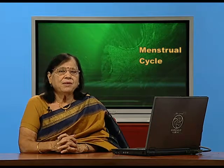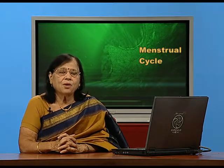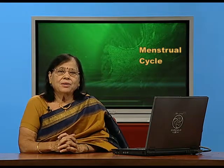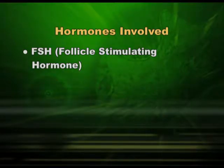In the previous sessions we discussed the ovary, ovarian follicles, the Graafian follicle, the corpus luteum, and the corpus albicans. Now let us apply that knowledge to understand the menstrual cycle. You can see in this diagram that to start with, the follicle is immature and becomes mature gradually under the influence of follicle-stimulating hormone, or FSH, from the anterior pituitary. FSH stimulates the ovarian follicle — here stimulation equals growth, enlargement, or maturation — so the follicle becomes more and more mature.